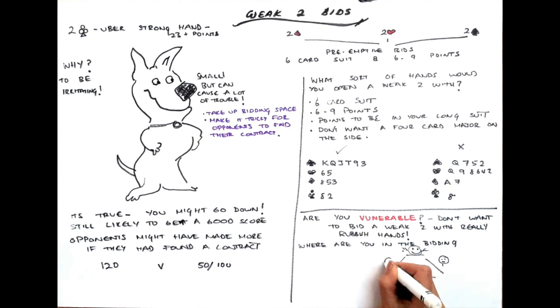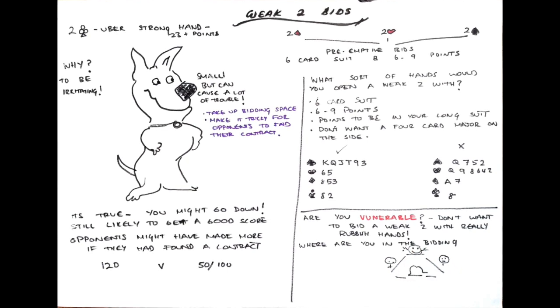If you're the first person to bid, then there are three people around the table, and it's most likely the majority of the points are with the other two than with your partner. So that's a good time to make a preemptive bid. If it's gone pass and then you're the second person to make a bid, then you're preempting two people. One of those is your partner. So in that position, you want to have a better hand to make a preemptive weak two bid.